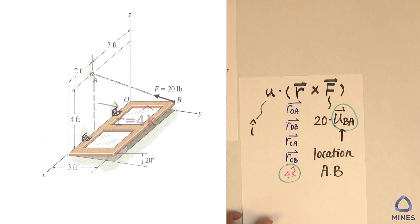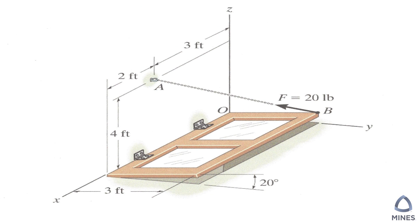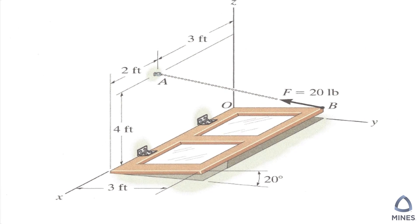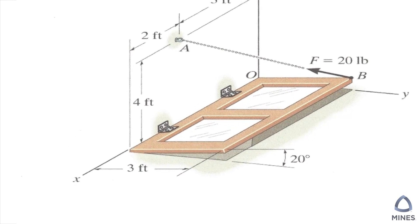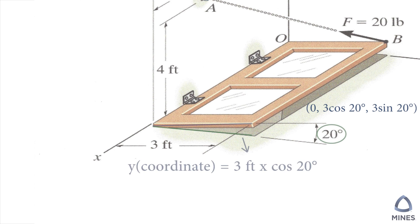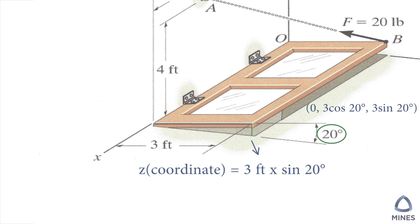As we talked about before, we have to gather the location of A and B so we can calculate the unit vector from B to A. The location for A will be (3, 0, 4). For the location of B, you can see it's in the yz-plane so x will be 0. The length for this edge will be 3 feet, so the y coordinate will be 3 cos 20° and we can use geometry to find out the z location: 3 sin 20°.